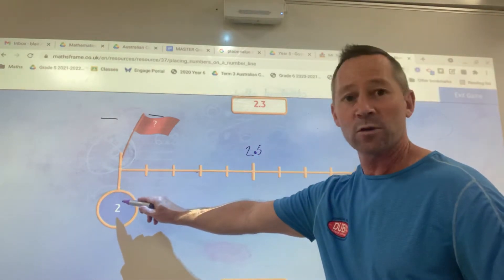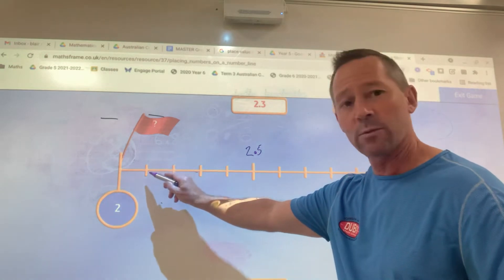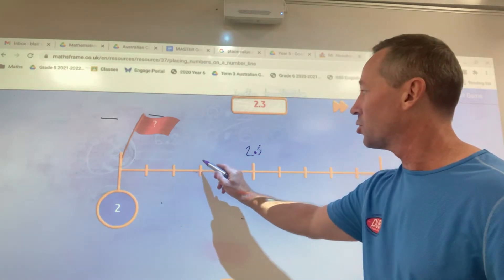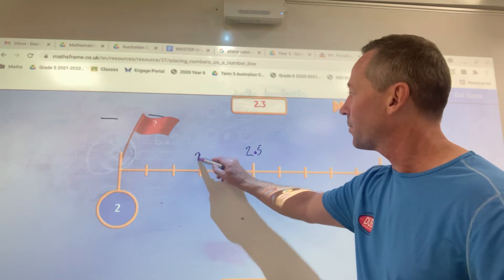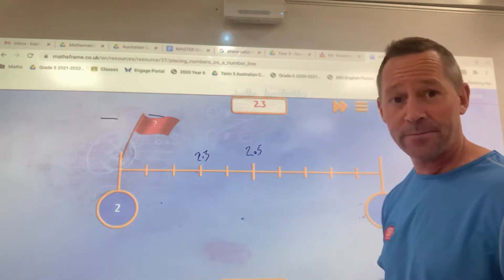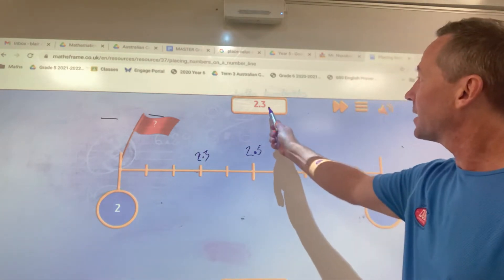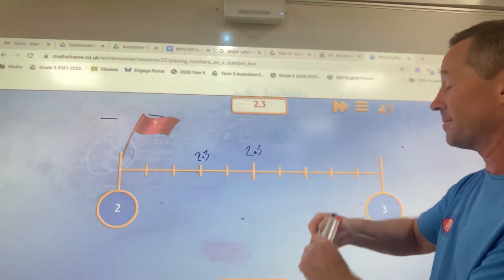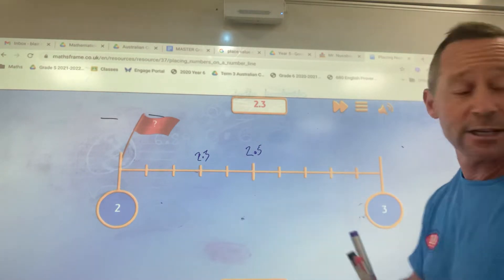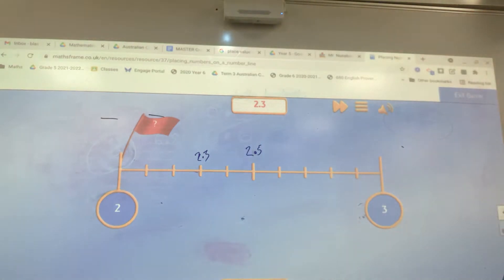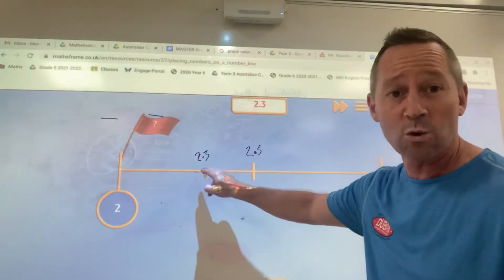If this is 2, or 2.0, then 2.1, 2.2, 2.3, it should go there. So you need to look at this and divide it up into those equal bits. So I'm thinking it must go here. Do I drag it? I don't know, it's not letting me do it, but that's where I would say it would be. 2.3 is right there.